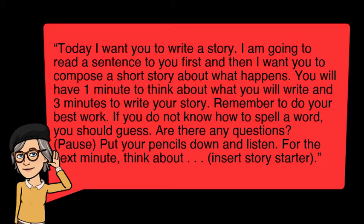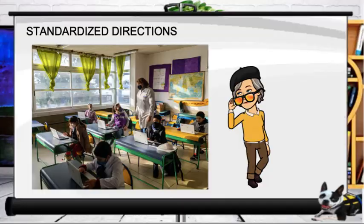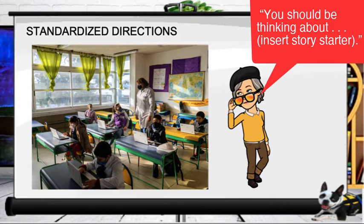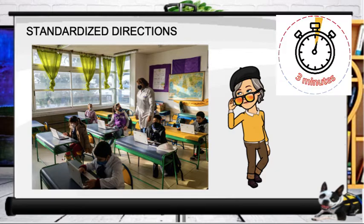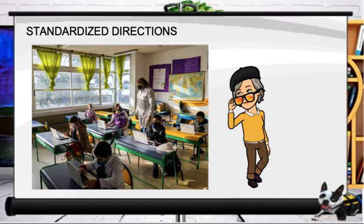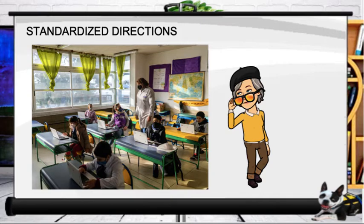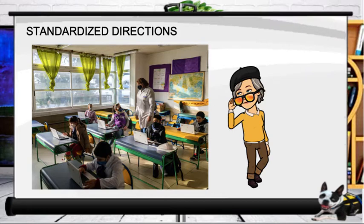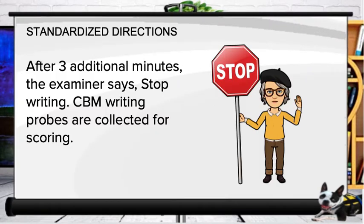Pause to answer any questions, then say: 'Put your pencils down and listen. For the next minute, think about...' and then read your story starter. Begin your stopwatch and allow one minute for students to think. Monitor students so they do not begin writing yet. After 30 seconds say, 'You should be thinking about [story starter].' At the end of one minute, restart your stopwatch for three minutes and say 'Now begin writing.' Monitor students' attention to task. Encourage students to work if they're not writing. After 90 seconds say 'You should be writing about [story starter].' At the end of three minutes say 'Thank you, put your pencils down.'